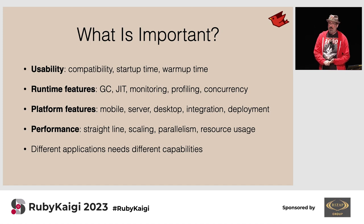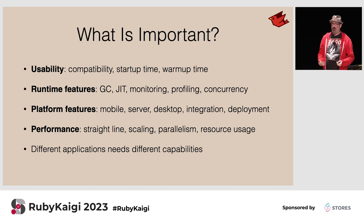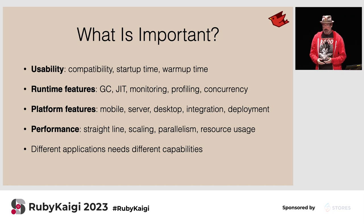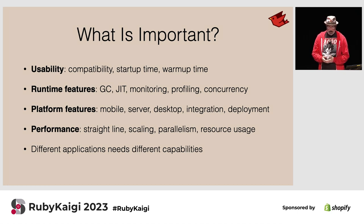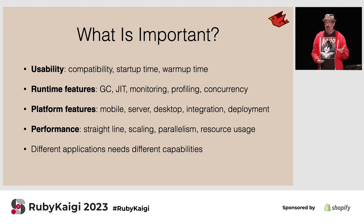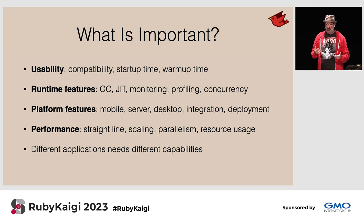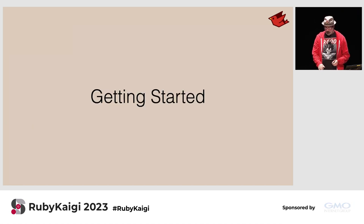I want to take a step back and ask: what is really important for a Ruby implementation? Everybody always talks about performance or garbage collection or straight-line execution, but there are a lot of other aspects — usability, compatibility, startup time, how it feels to use. Runtime features like the garbage collector, the JIT, tooling on that platform, being able to build server and desktop applications, integration with the platform, and then performance, which has many dimensions.